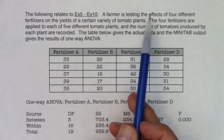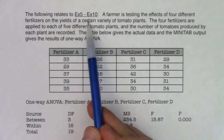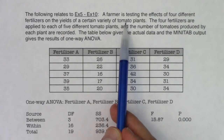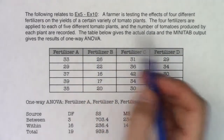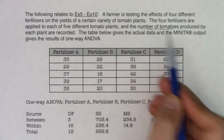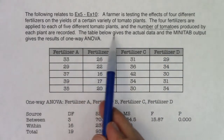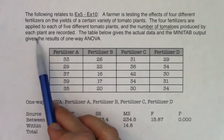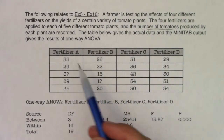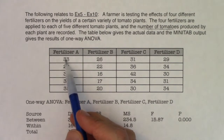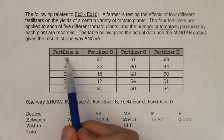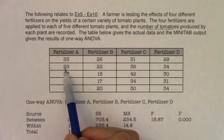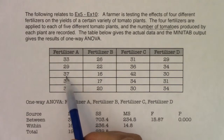All right, here we go. A farmer is testing the effects of four different fertilizers on the yields of a certain variety of tomato plants. The four fertilizers are applied to each of five different tomato plants and the number of tomatoes produced by each plant is recorded. So remember: the number of tomatoes is recorded. This particular tomato plant was given fertilizer A and it gave the farmer 33 tomatoes; a different plant with fertilizer A gave 29, and so on.